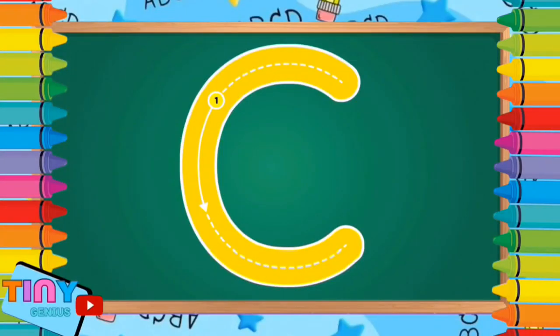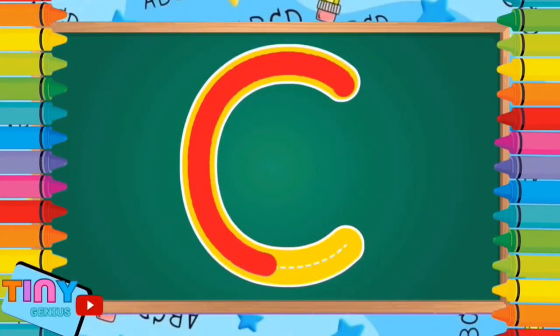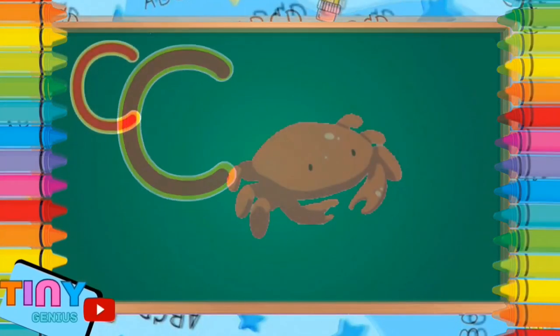Okay, let's move on to the next letter, the letter C. Pull back and around. C is for crab.